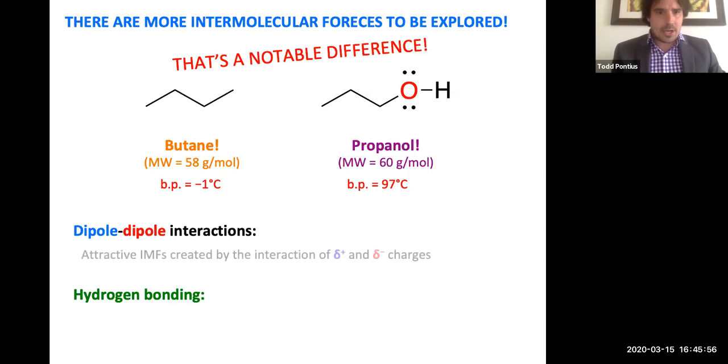Well, enter dipole-dipole interactions. Dipole-dipole interactions are these attractive intermolecular forces that are the result of partial positive and partial negative charges. We can basically almost think of it as molecules having an internal magnet of sorts built into them. So if we look at propanol, the very electronegative oxygen is going to be hoarding electron density, pulling it away from both the carbon and the hydrogen. I only have the hydrogen illustrated here, but the carbon that's attached to the oxygen will also have a notable partial positive charge.